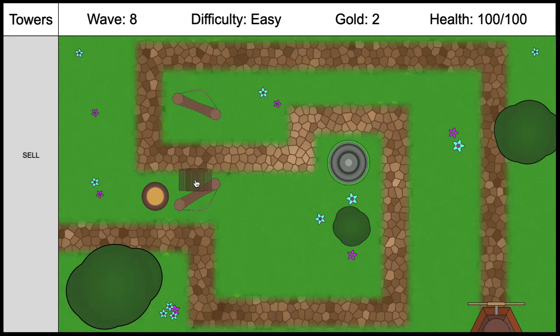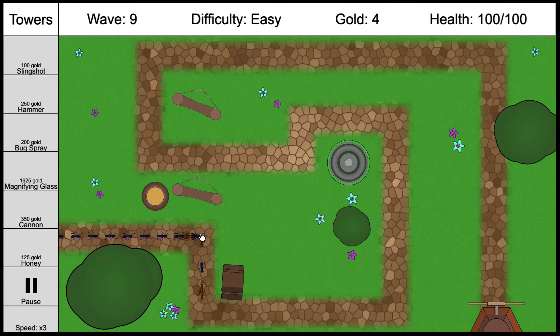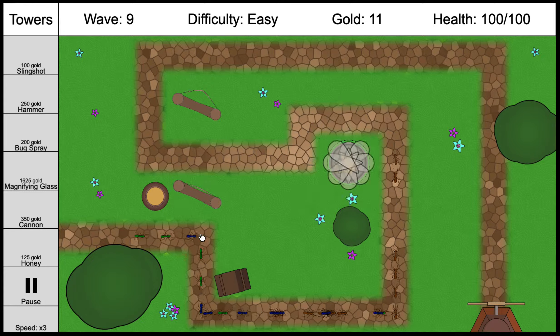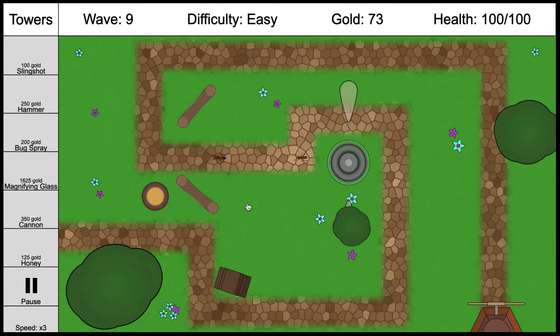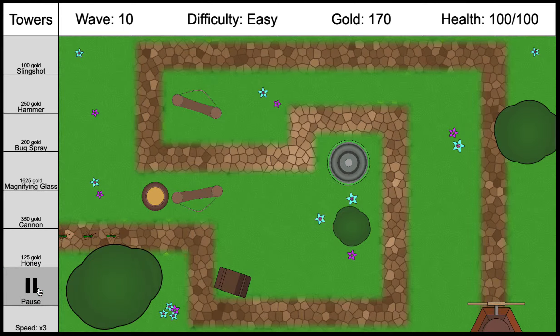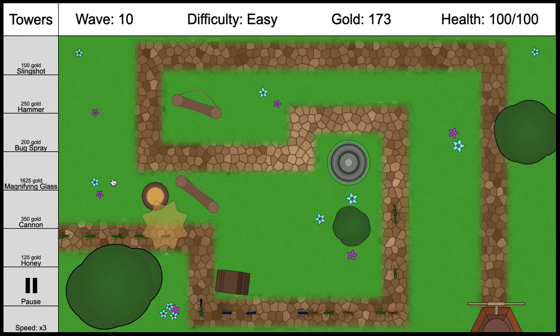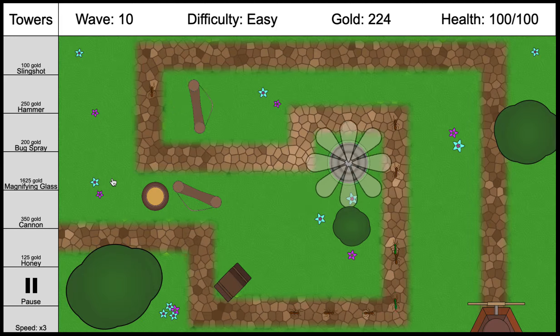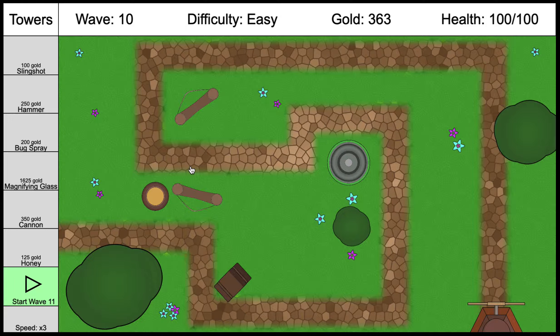We have 252 gold. We can do a hammer here. A hammer hits really quickly, and in future iterations, it'll be able to destroy armored ants when I implement those.